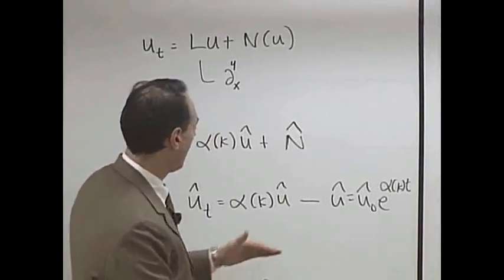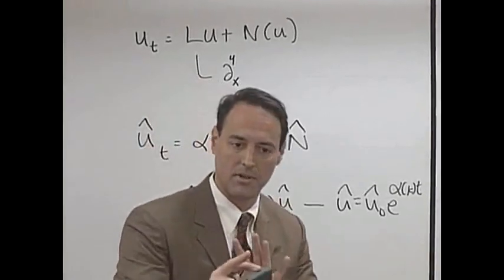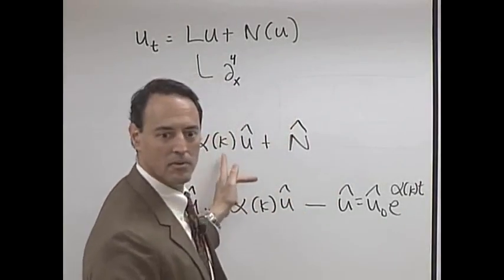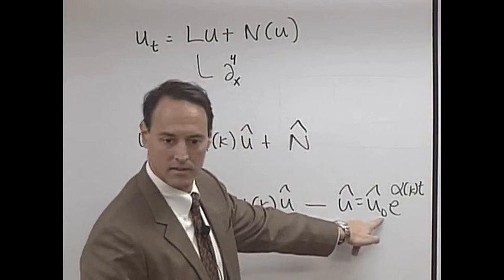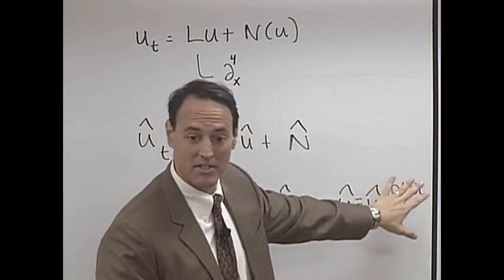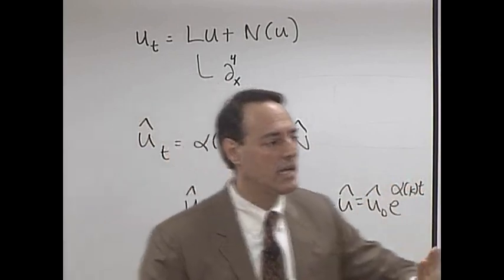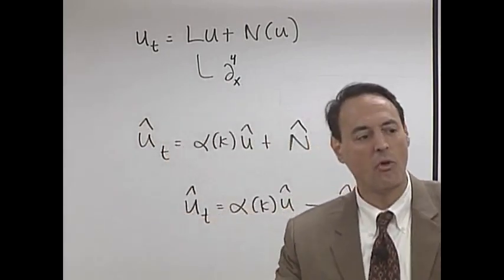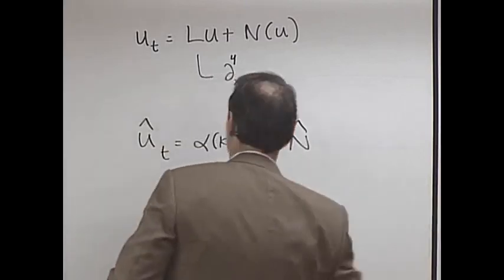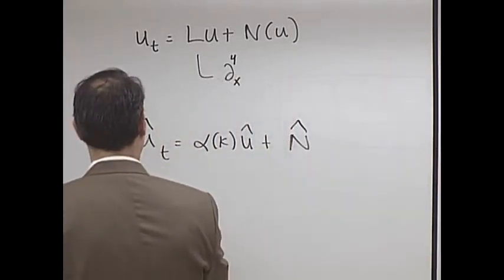So we want to say, well look, in some sense what this is telling us is something very important. You kind of know what this alpha k does to you, right? In some sense, if it weren't for that N, you'd have the exact solution. But can I sort of fold that into my solution technique? In particular, what I'm going to do is move this over to the other side.